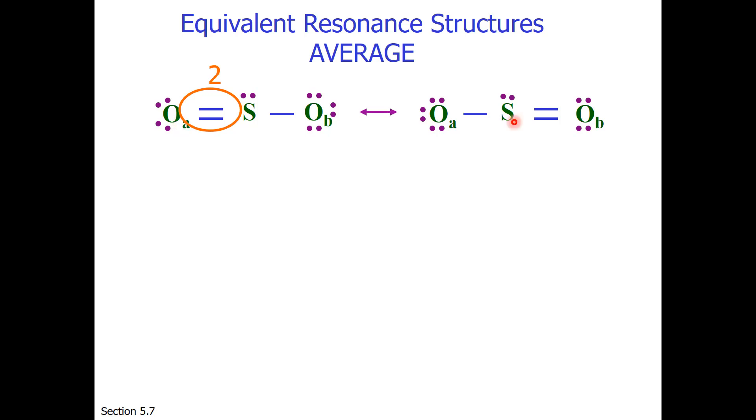For the structure on the right, the sulfur-oxygen bond order for the same oxygen, oxygen A is 1. What is the average of 2 and 1? It's 1.5 or 3 halves.